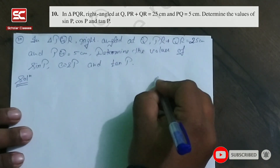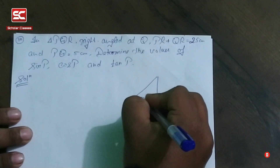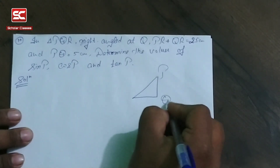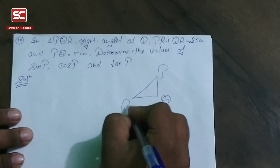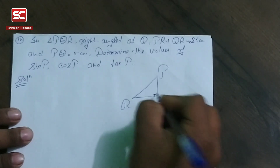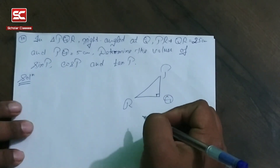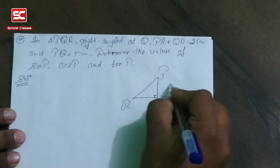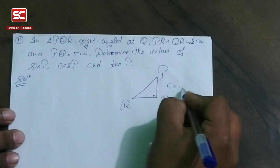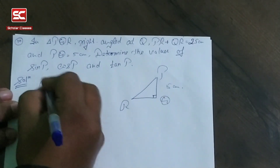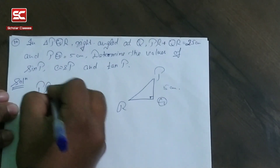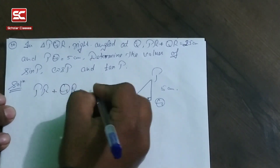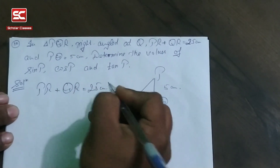First, we make a triangle. PQR with right angle at Q. Here PQ is equal to 5 cm and PR plus QR is equal to 25 cm.